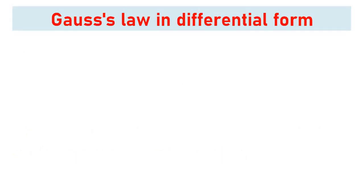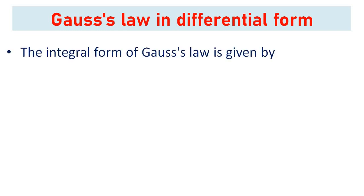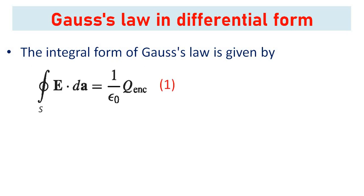We will now look at Gauss's law in differential form. We have discussed the integral form of Gauss's law, and from this integral form we can calculate the differential form. The integral form of Gauss's law is given by: closed surface integral of E dot dA equals 1 over epsilon-zero times q-enclosed. Let this be Equation 1.